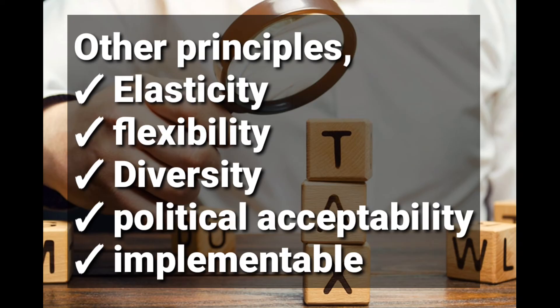Flexibility: it should be easily possible for authorities to revise the tax structure. Diversity: the government should collect taxes from different sources rather than concentrating on a single source of tax. Political acceptance: the tax imposed should be accepted by politicians — perhaps by the president and ministers. Finally, implementability: the tax as formulated should be implementable. For example, a 90 percent income tax is not implementable, so any tax imposed should be practically implementable. Those are the principles or canons of taxation.